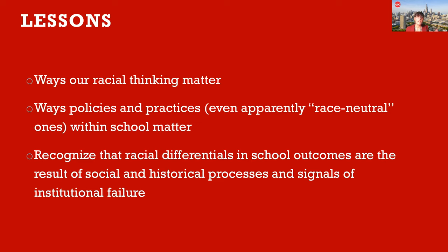Our institutions and organizations are not race neutral — that's not the starting place. If race still matters in any way, if we're seeing racial disparities, if we're seeing race shaping school outcomes, that's all about a process of social doing and in many ways about institutional failure. Therefore, the onus is on us to break that link and make it be different. I'll end there and I look forward to the next talks.